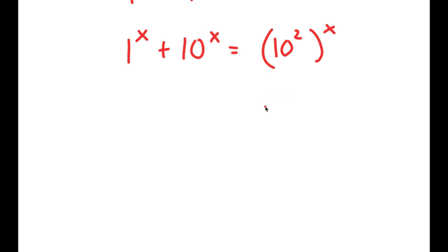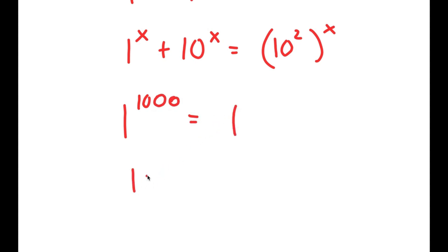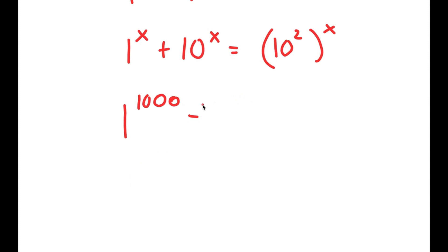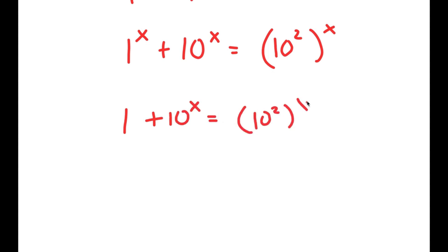Now from here, I'm going to look at the term 1 to the power of x. Well, 1 to the power of any number, like 1000, is still equal to 1. And even 1 to the power of infinity is still equal to 1. So no matter what value x is, 1 to the power of x will still equal 1, meaning we can just say this is 1 plus 10 to the power of x is equal to 10 squared to the power of x.